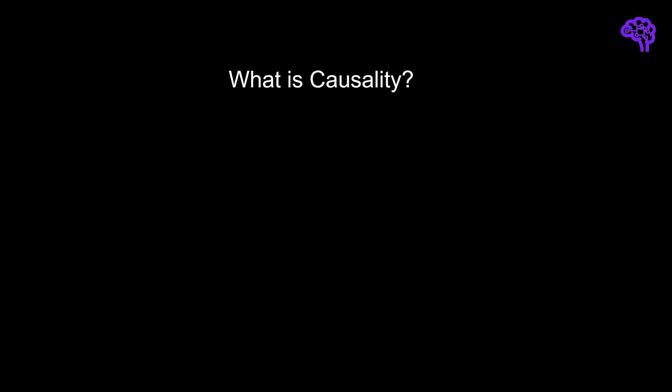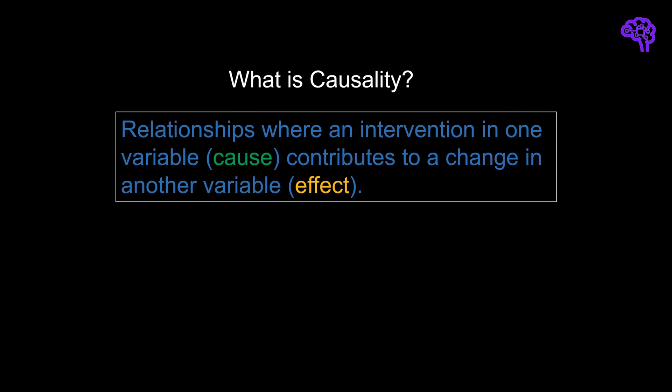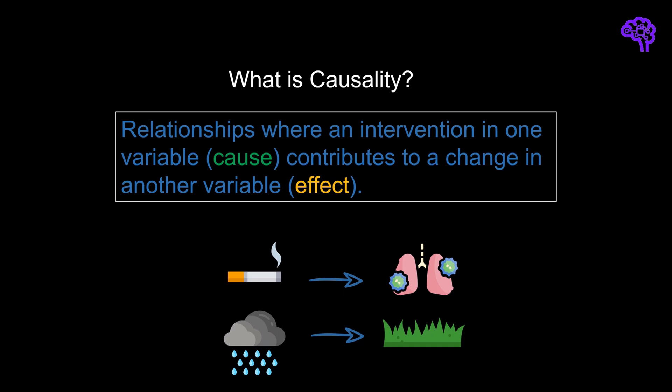Let's begin this video with the valid question: what is actually causality? This will not be a full causal inference introduction, but instead I will just give some intuition about the key concepts. Later I will talk about some interesting papers that connect causality with GNNs. From a statistical perspective, causality can be described as relationships where an intervention in one variable contributes to a change in another variable, but not necessarily vice versa. Typical examples are that smoking causes cancer or rain causes the lawn to be wet. Because it's a cause-effect relationship, the other direction is not true. For example, cancer won't cause smoking.